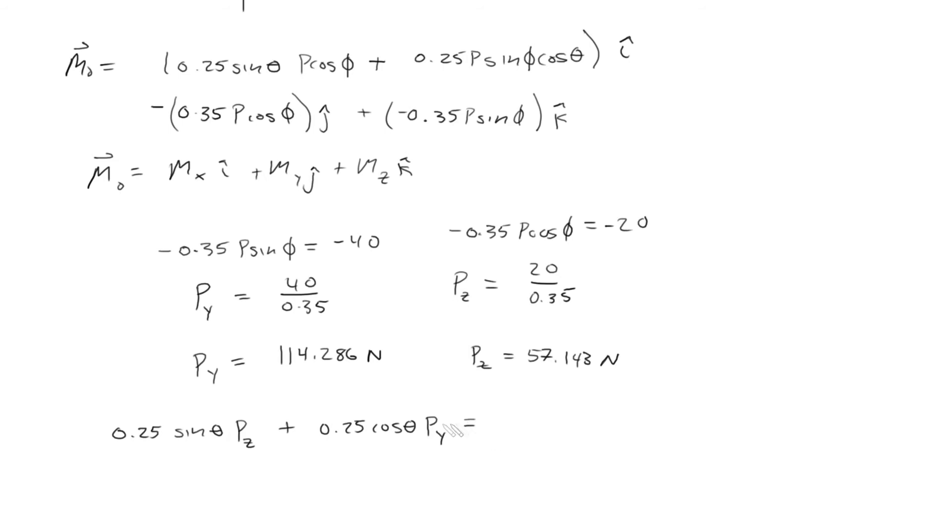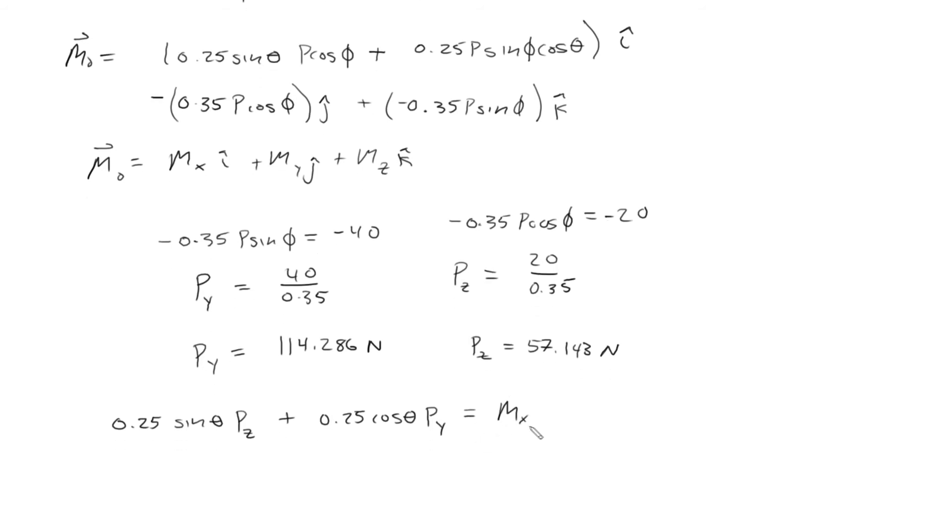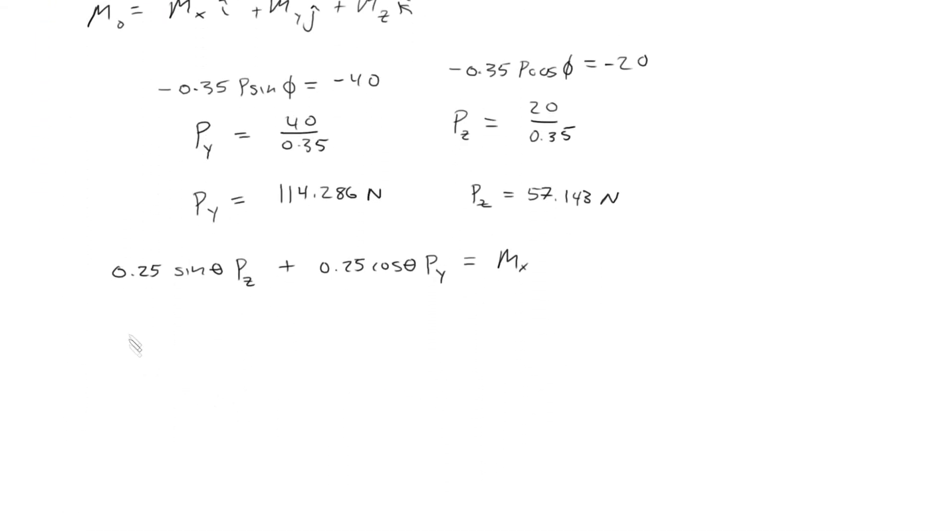And that's going to equal, well this is what we're looking for. So we just plug in the values for this and we're given the angle theta which is 60 degrees. So we could just plug in everything we know. So this is going to be 0.25 sine 60 and then this is going to be Pz which is 57.143.